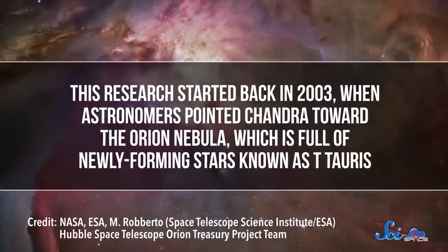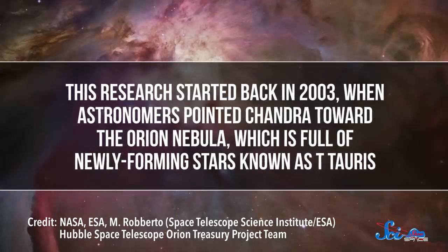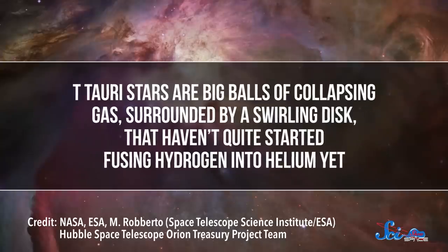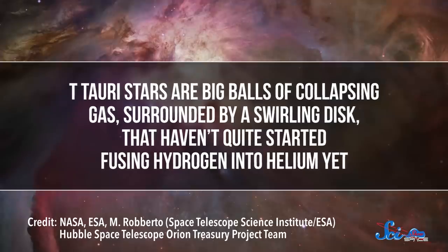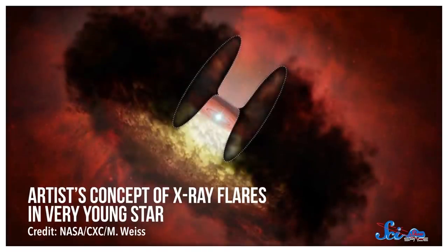For one, Chandra showed us that newborn stars play a huge role in determining the fate of planets that form around them. This research started back in 2003, when astronomers pointed Chandra toward the Orion Nebula, which is full of newly forming stars known as T Tauri stars. T Tauri stars are big balls of collapsing gas surrounded by a swirling disk that haven't quite started fusing hydrogen into helium yet. They give off a lot of X-rays, which come in flares. And astronomers found that those flares create turbulence in the disk around them, where the planets form.